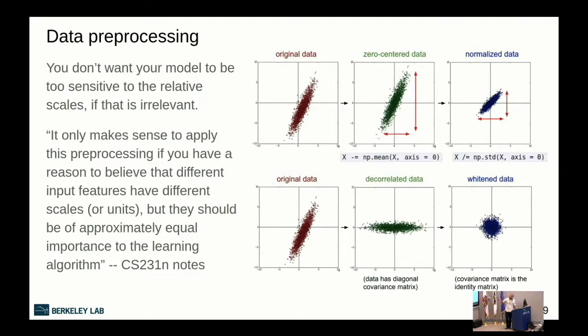There are many ways to do normalization depending on what you're working with. Another approach is whitening the dataset: find the eigenvectors of your distribution, apply a transformation using that diagonal matrix, project your data onto the eigenvectors, and then normalize to get whitened data. You really need to think about what dataset you're dealing with before choosing a normalization method.